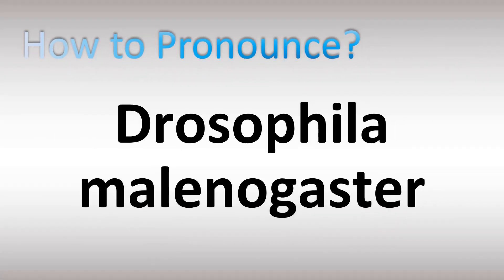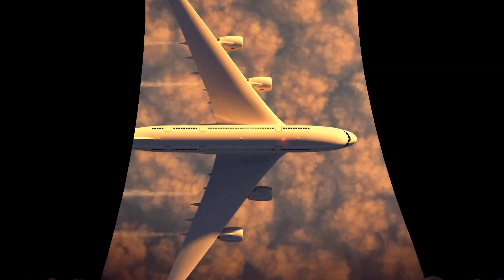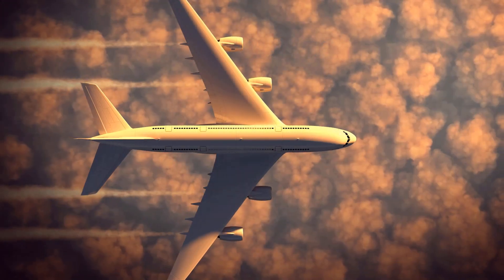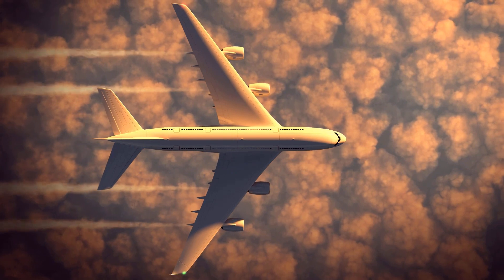We are looking at how to pronounce the scientific name for a species of fruit flies. Drosophila, Drosophila, Drosophila, Melanogaster, Melanogaster, or Melanogaster in British English. Here are more videos on how to pronounce more confusing words and names — too many mispronounced.